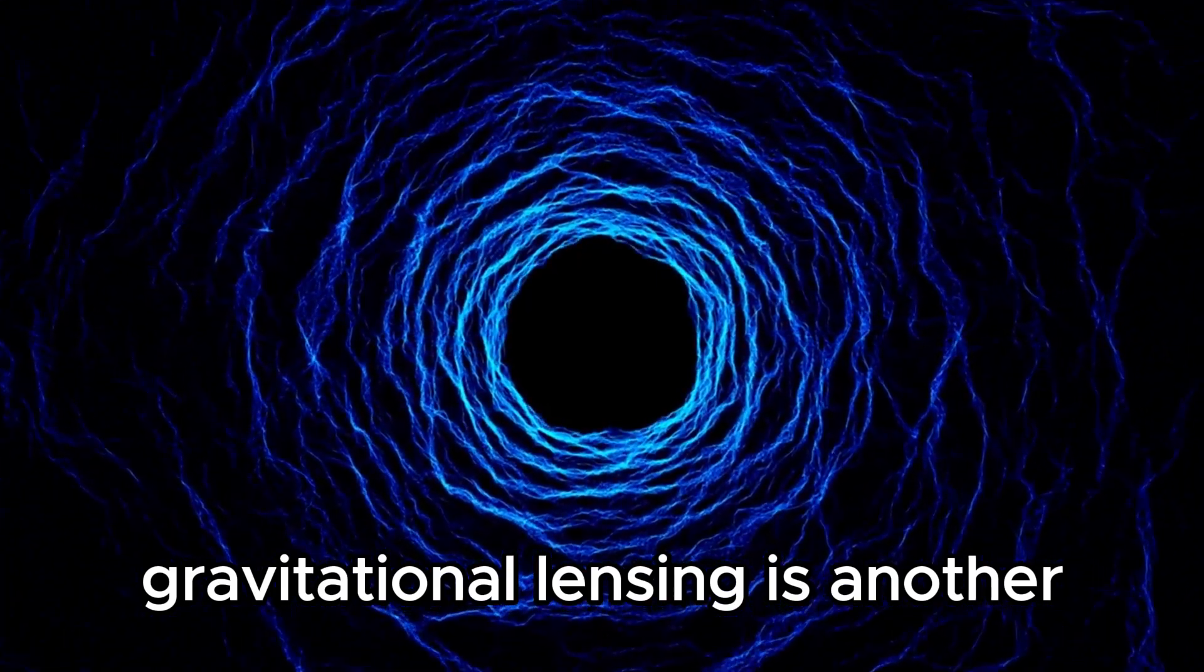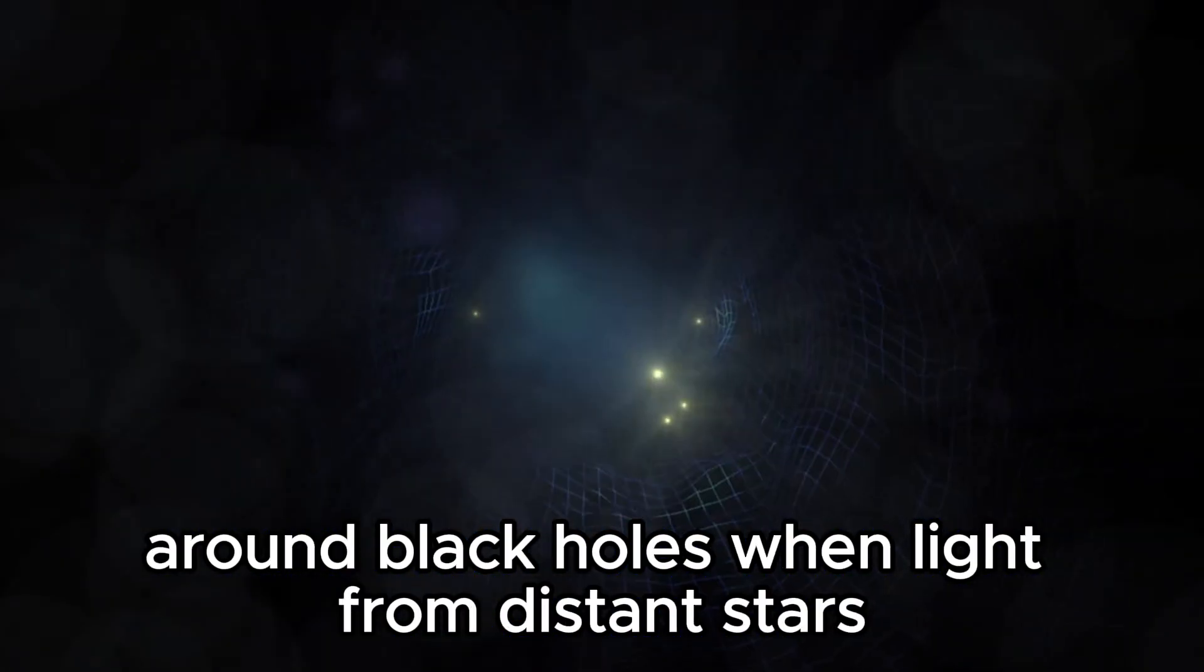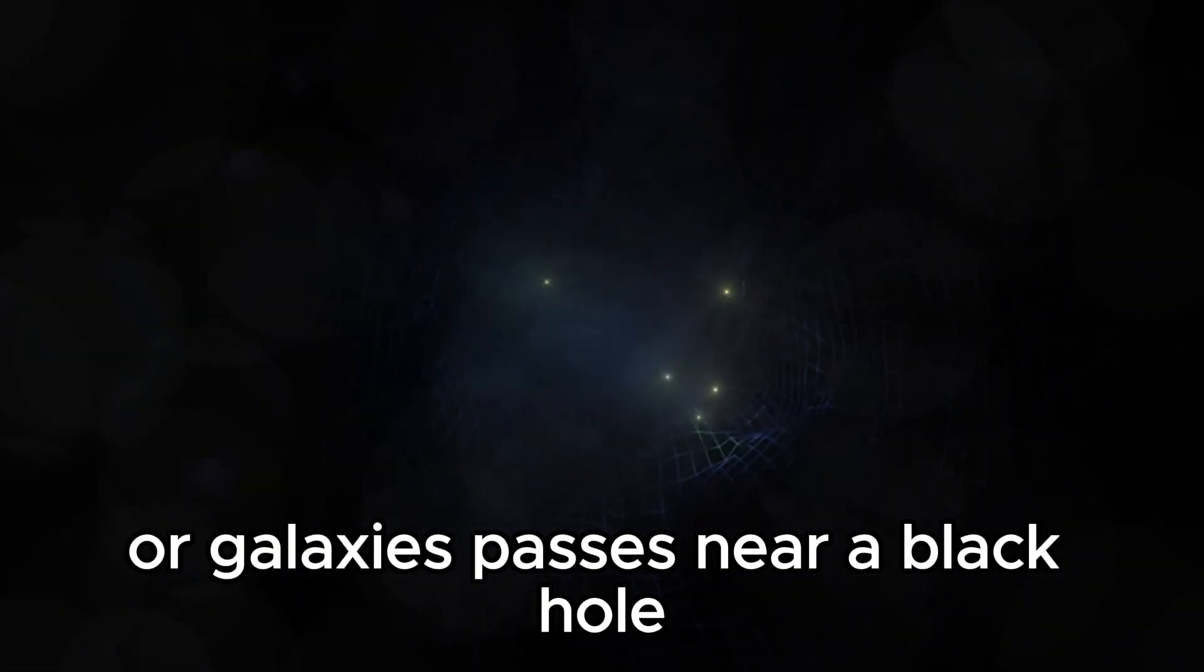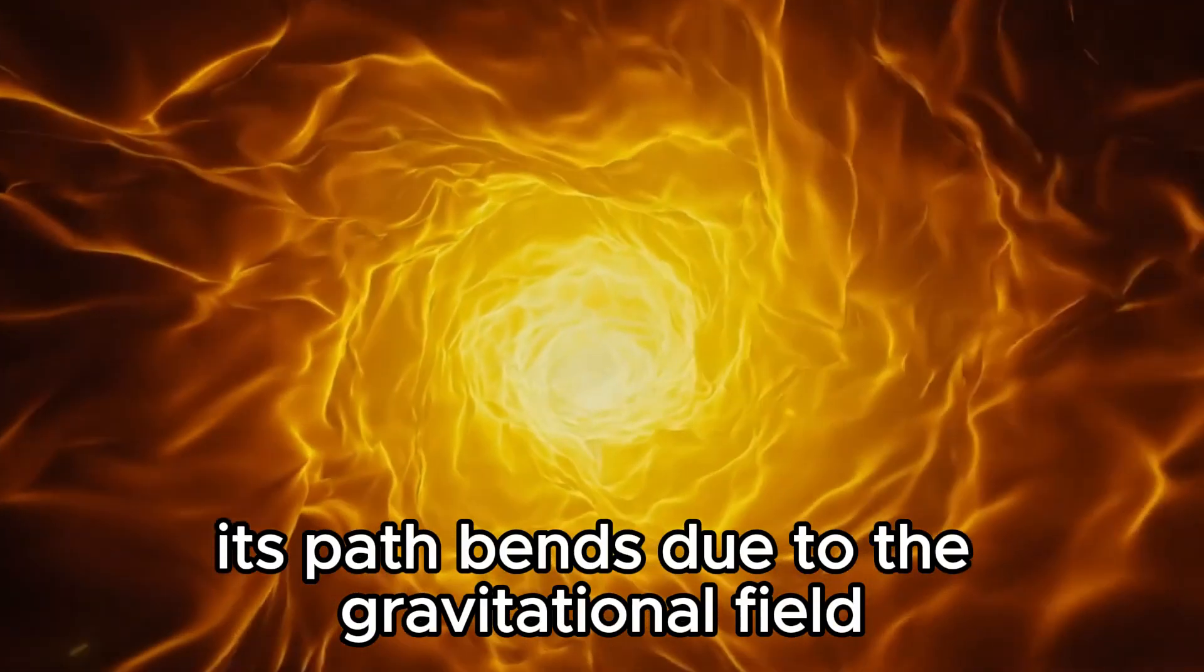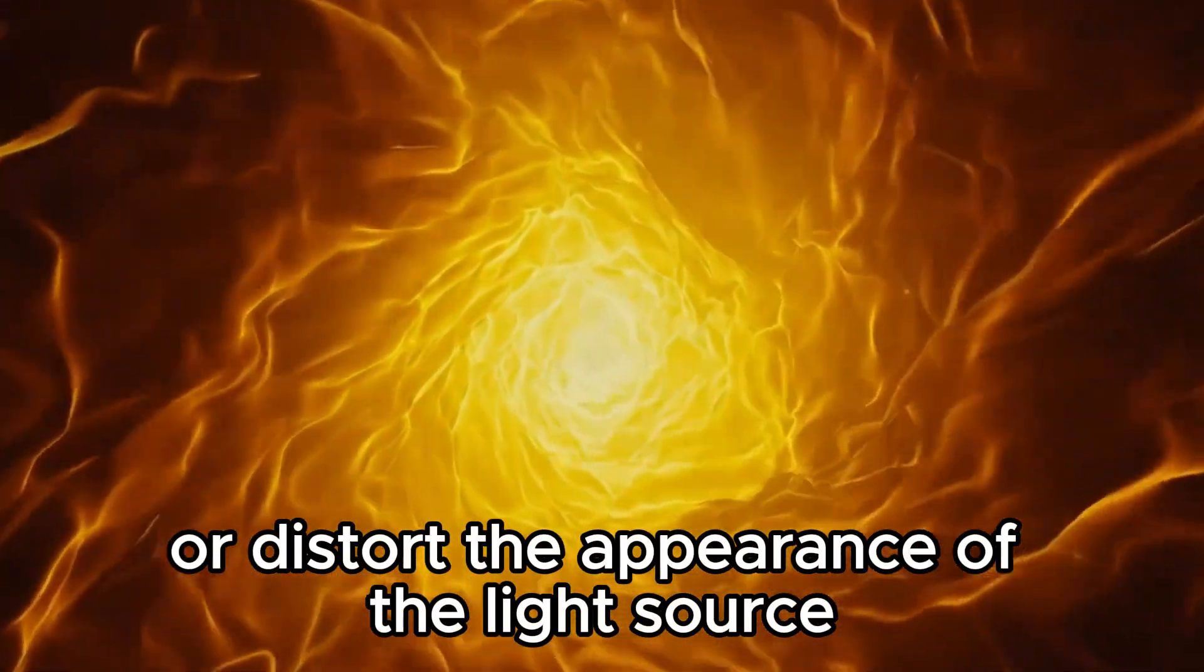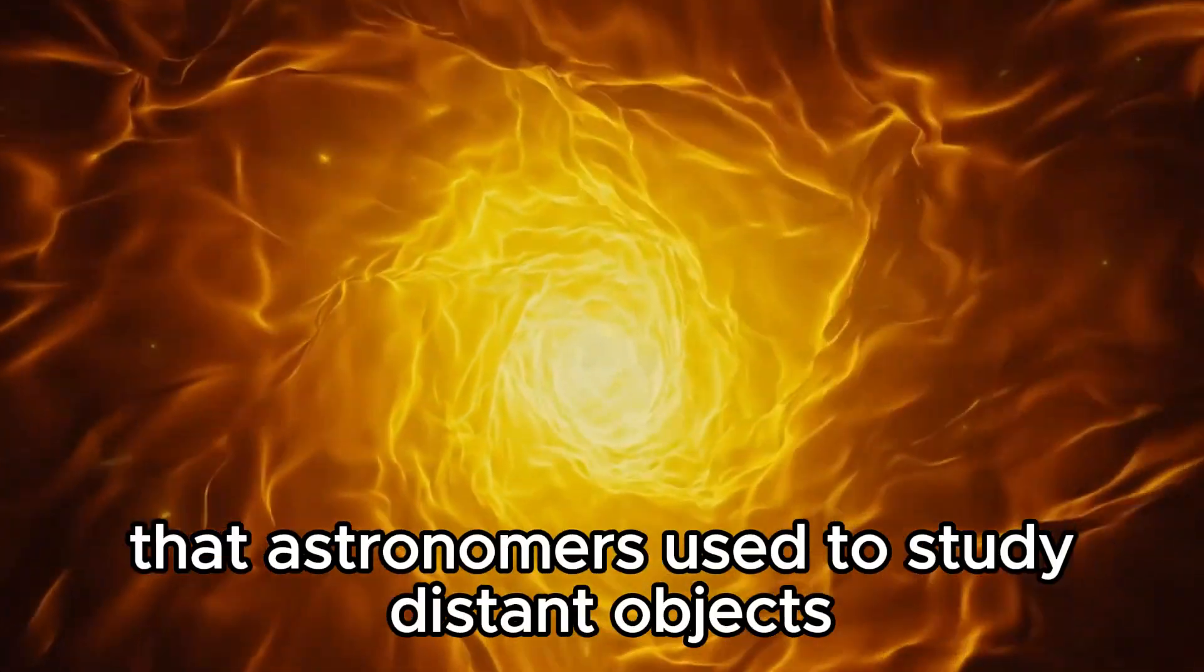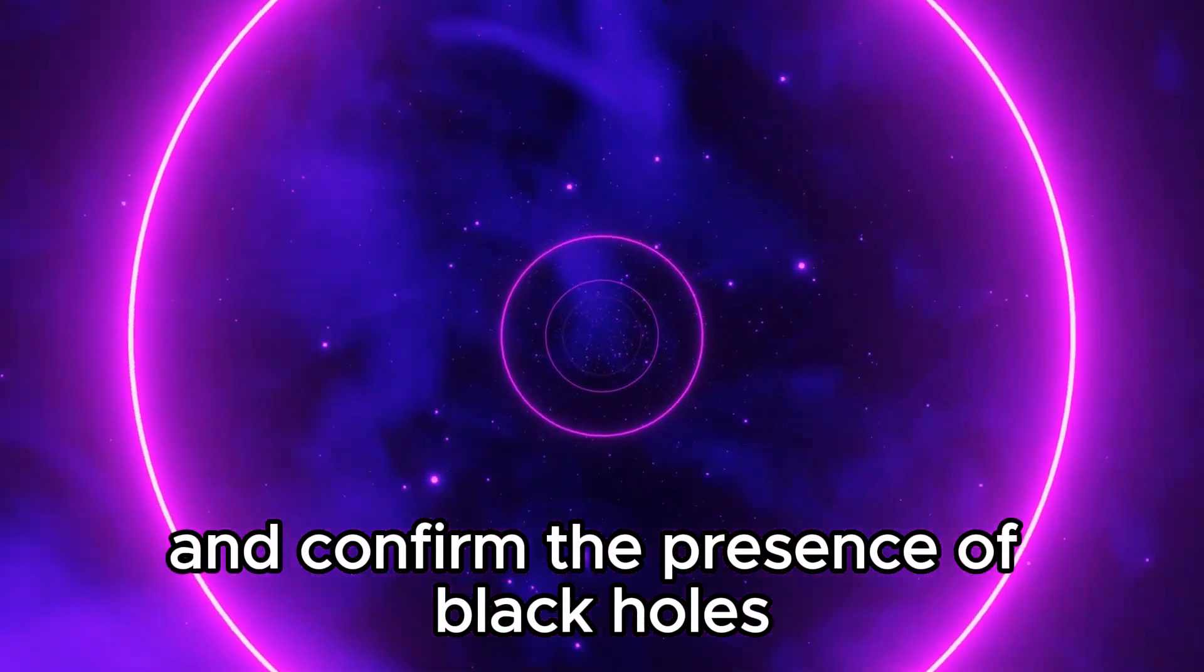Gravitational lensing is another consequence of spacetime curvature around black holes. When light from distant stars or galaxies passes near a black hole, its path bends due to the gravitational field. This bending can magnify or distort the appearance of the light source, creating visual illusions that astronomers use to study distant objects and confirm the presence of black holes.